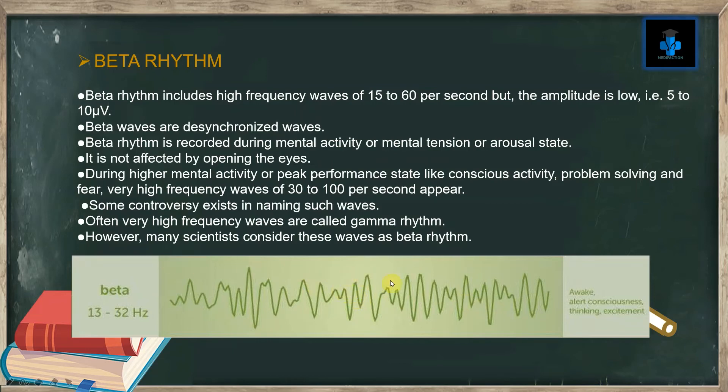Beta rhythm includes high frequency waves of 15 to 60 per second, but the amplitude is low at 5 to 10 microvolts. Beta waves are desynchronized waves. Beta rhythm is recorded during mental activity, mental tension, or an arousal state.